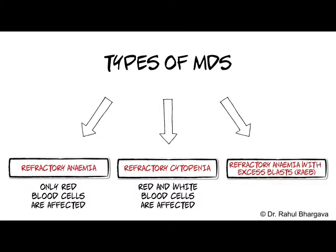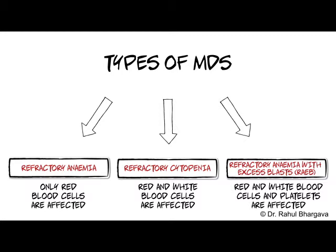Refractory anemia with excess blasts, RAEB, where the red blood cells, white blood cells and platelets are affected, and there is a higher risk of developing acute leukemia.